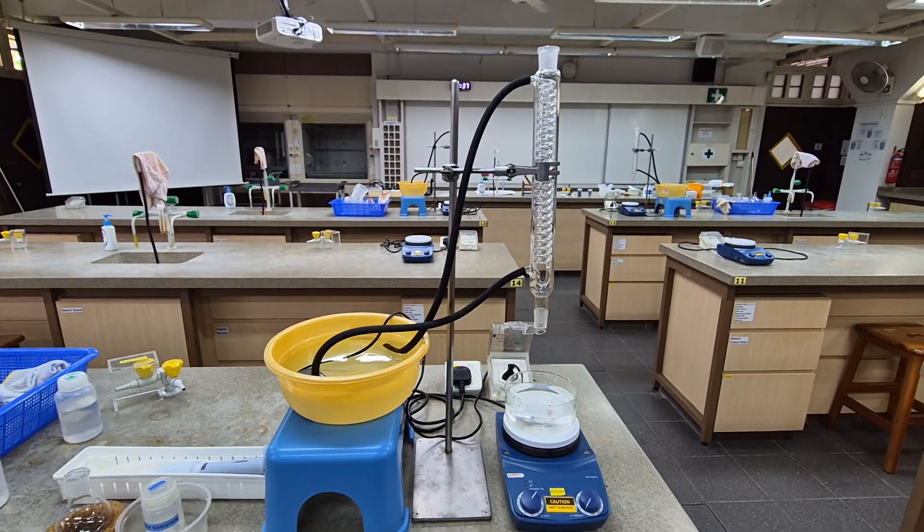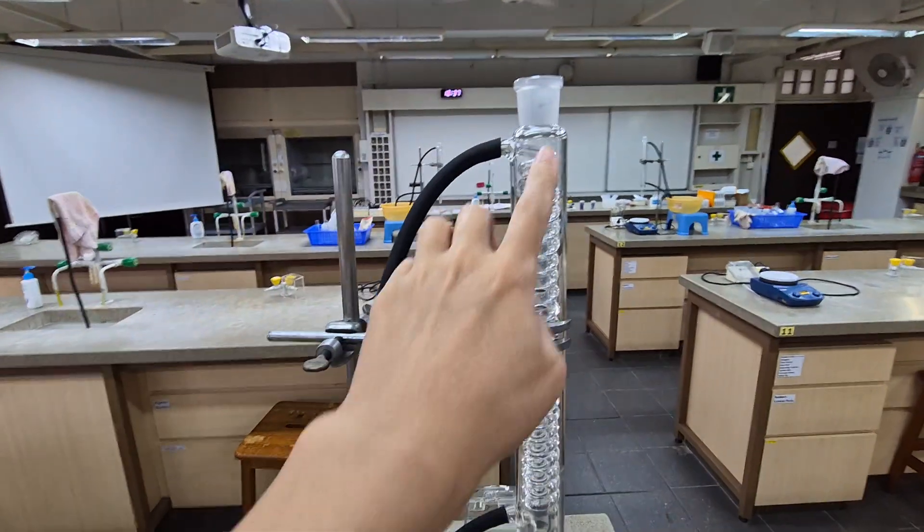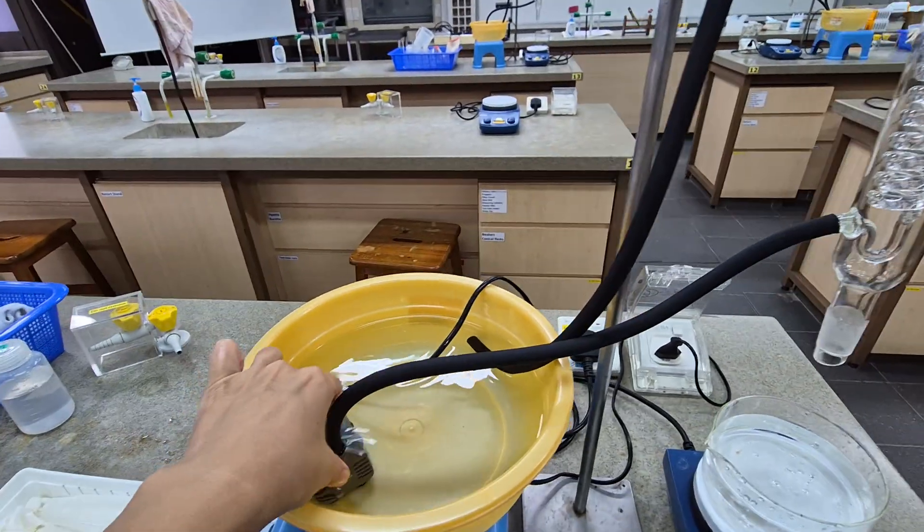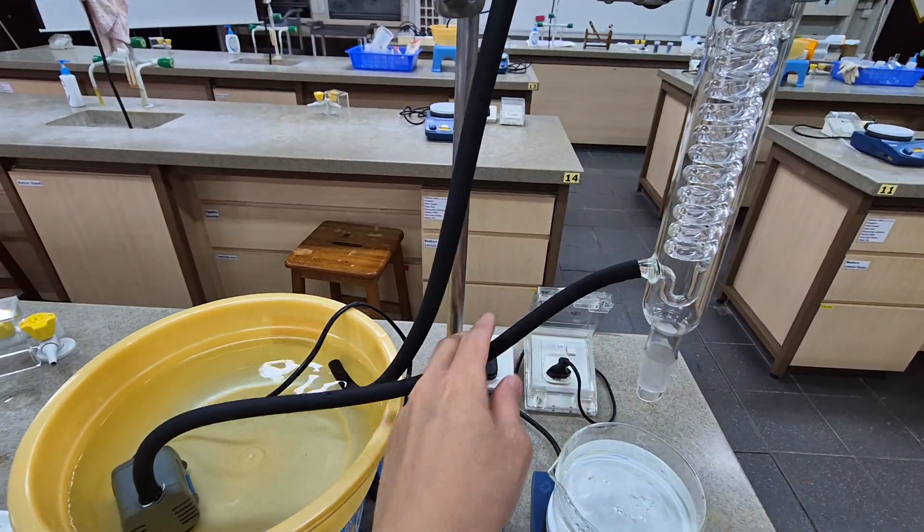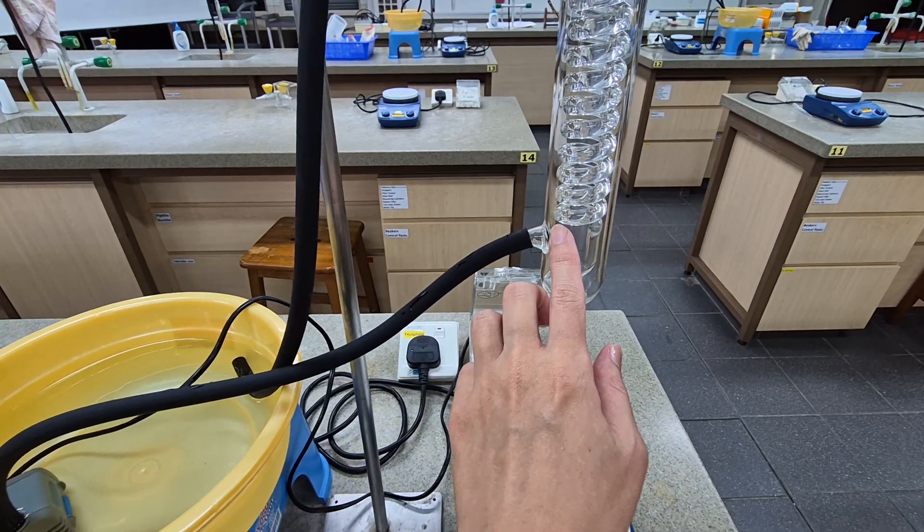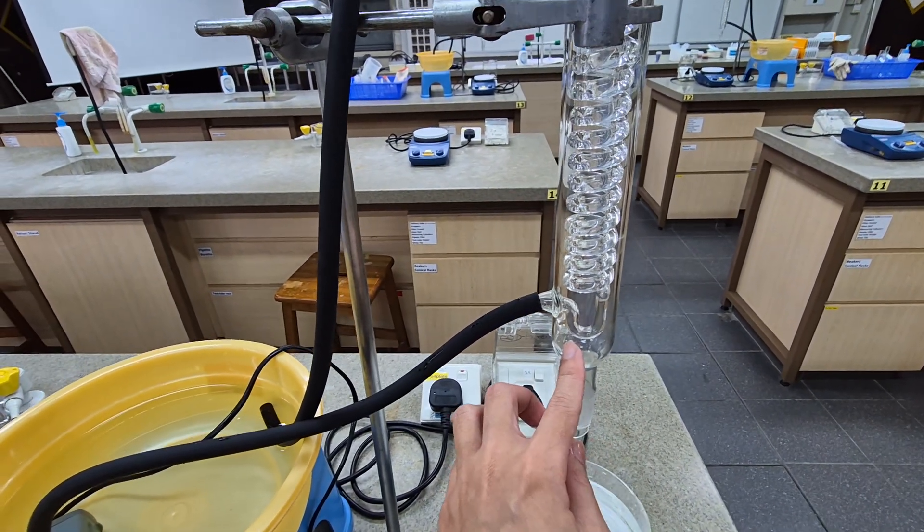This is the reflux setup without the round bottom flask. This is the reflux condenser. We have a fish pump here to pump in water, so the cool water will enter from the bottom. The reason why the cool water needs to enter from the bottom is because during reflux when the solvent and the reactor evaporates, it would be best if they touch the coldest parts of the condenser first.